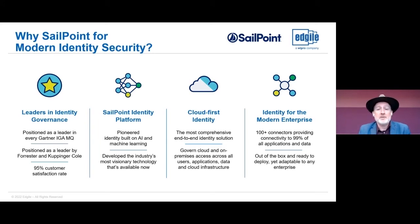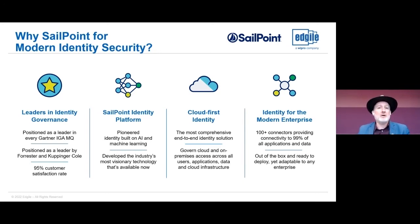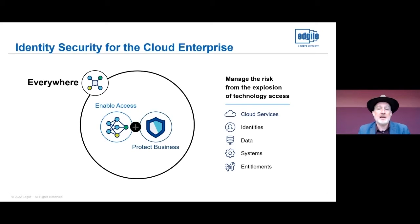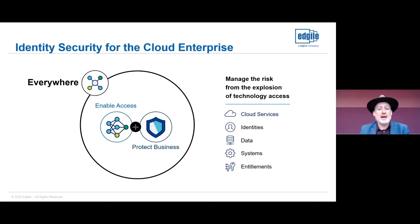Things are very distributed and ephemeral today. You need something with the speed and scale that AI and ML can provide to set you up for identity in the modern enterprise — visibility into all applications whether on-premise or cloud-native, finding them, abstracting their access model, and using identity to govern them well. Providing identity security for a cloud enterprise is no longer simple because not only are your applications and data distributed in the cloud, but your identities have also become distributed.